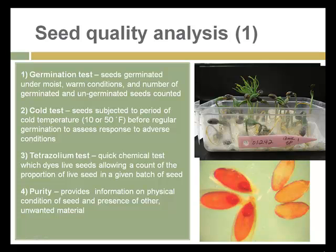In commercial seed production, there are several tests for seed quality that accompany the documentation of seed sold to growers. The first is a germination test, where seeds are germinated under moist, warm conditions and a physical count is made of the seeds that germinate and those that don't.